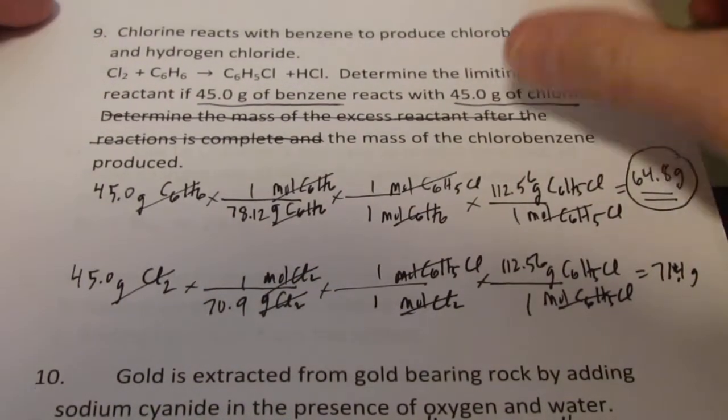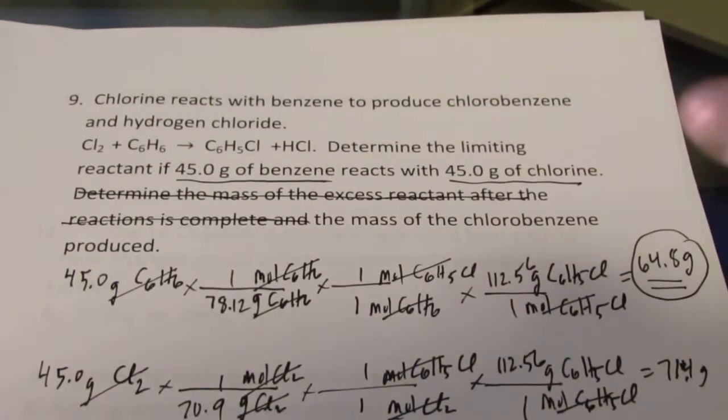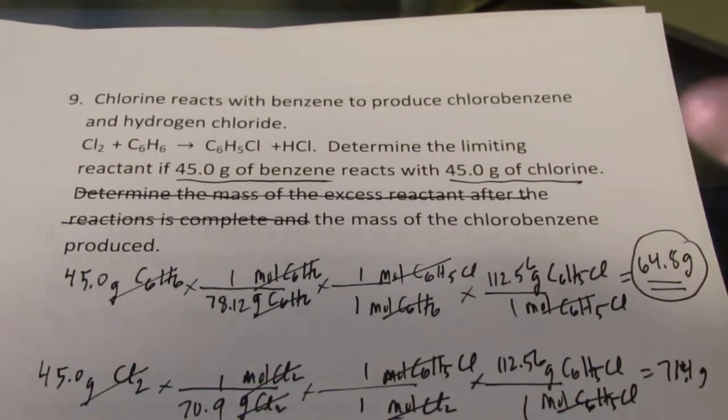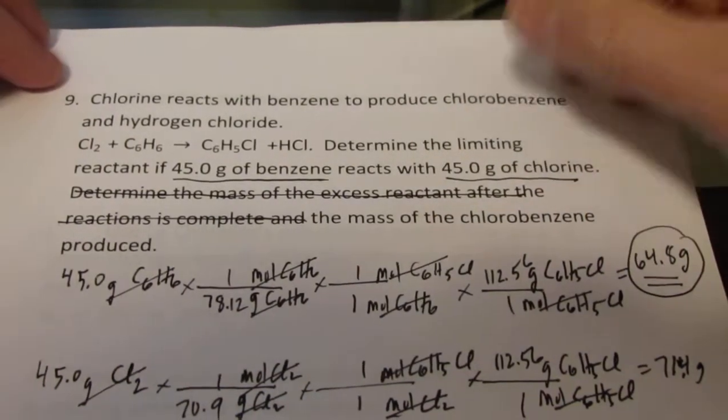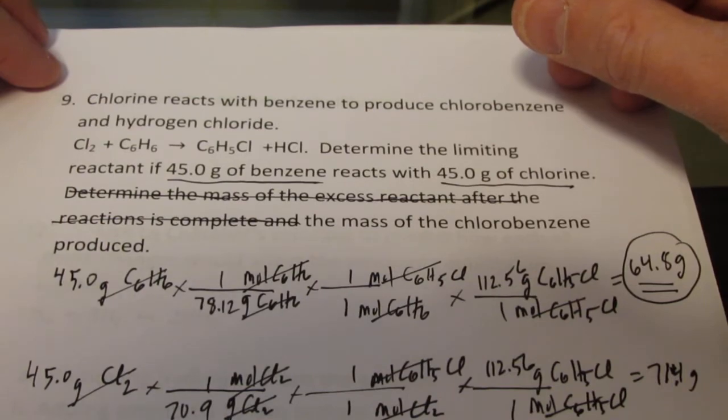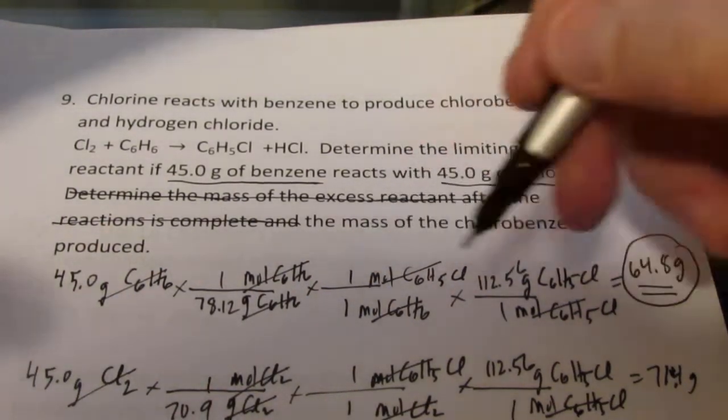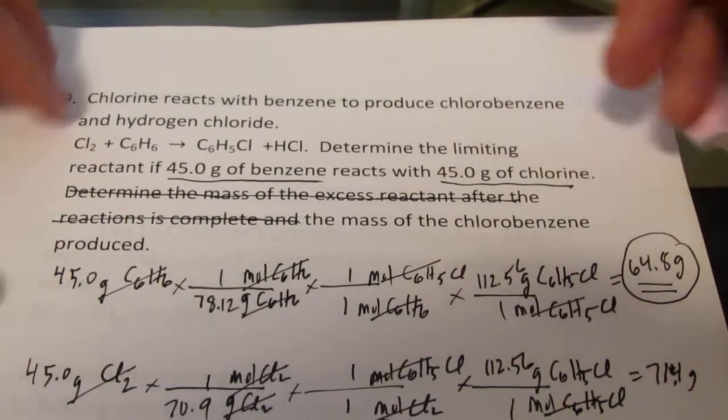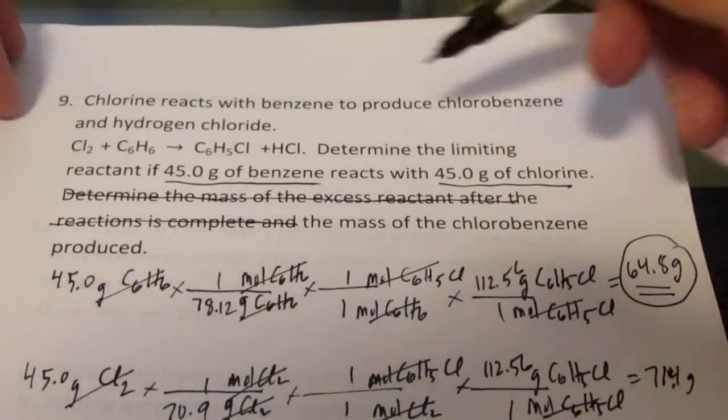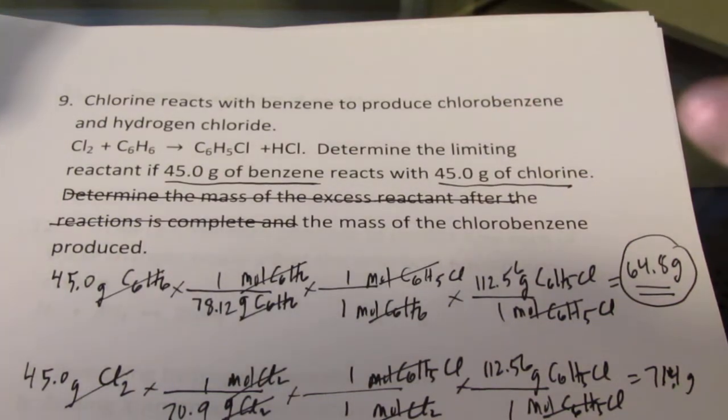Okay kiddos, as promised we're back for part two of exam five review. Actually I've done a little bit of work here to speed things up a little bit for us. I'm not sure if you guys want to see me find molecular weights and balance equations anymore, so we're speeding this up just a little bit. We're going to start with number nine, which is a limiting reactant problem.